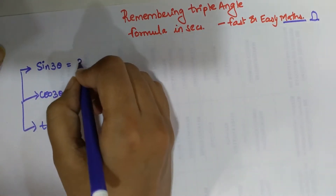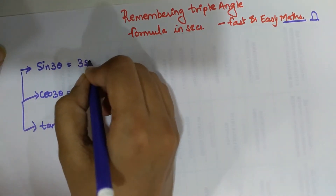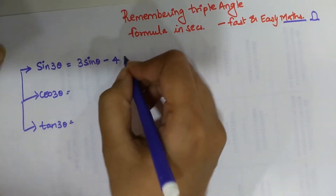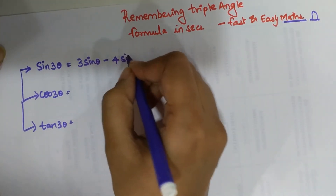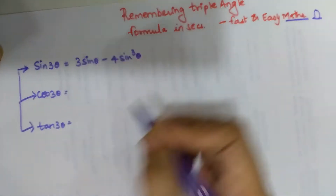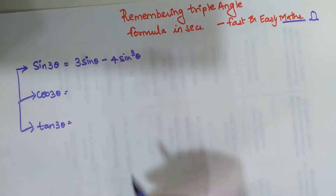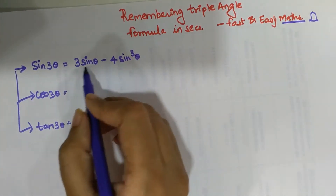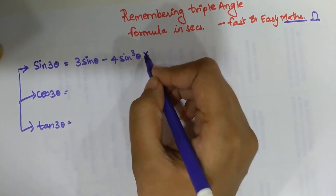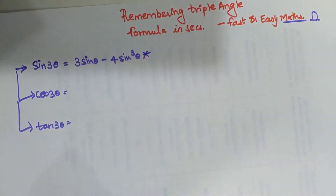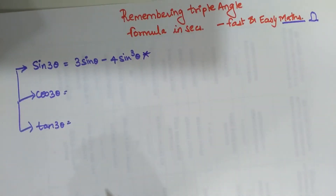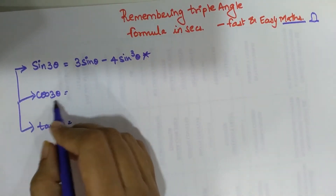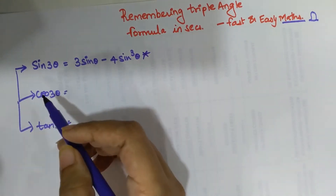The value of sine 3θ is nothing but 3 sinθ minus 4 sin³θ. This is the formula which you need to remember. Now, what will be the formula of cos 3θ?